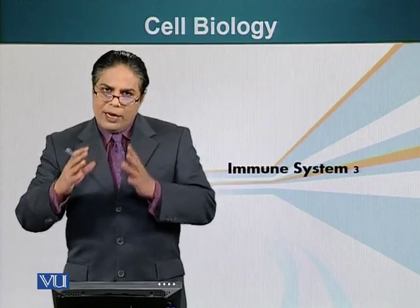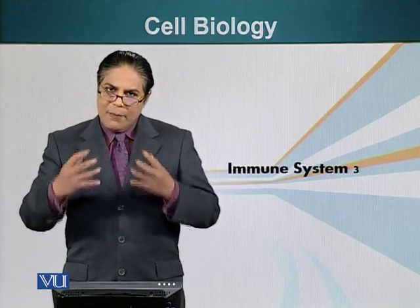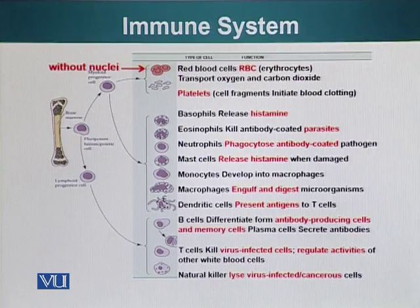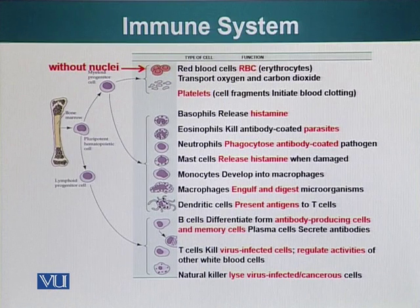Before we go any further and see what happens next, let's talk about the cells that make up the immune system. Here's a slide which shows you the major immune cells. All immune cells originate from precursor cells in the bone — these cells reside in the bone marrow and are truly potent hematopoietic cells. These cells divide and can form two types of progeny: myeloid progenitor cells and lymphoid progenitor cells.